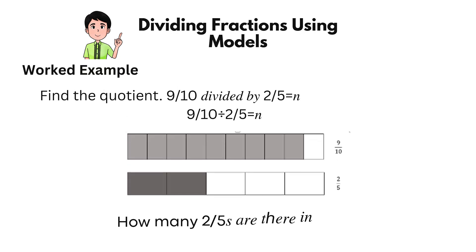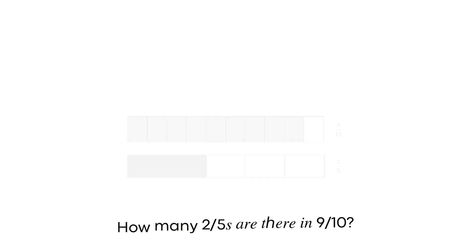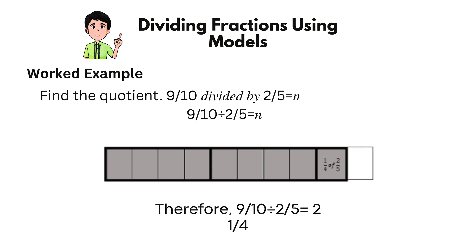Find the quotient: nine-tenths divided by two-fifths equals n. Let's illustrate nine-tenths and two-fifths. How many two-fifths are there in nine-tenths? Notice that two-fifths equals four-tenths. Therefore, nine-tenths divided by two-fifths equals two and one-quarter.